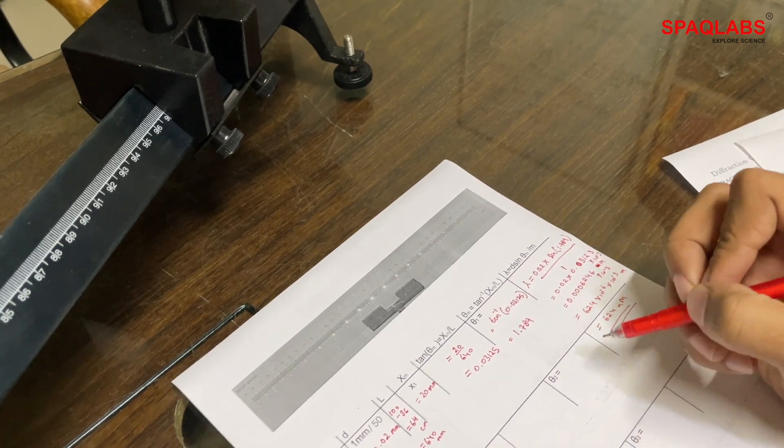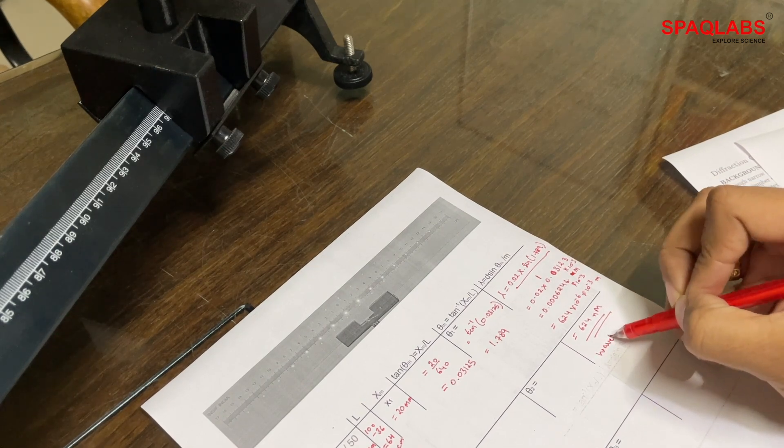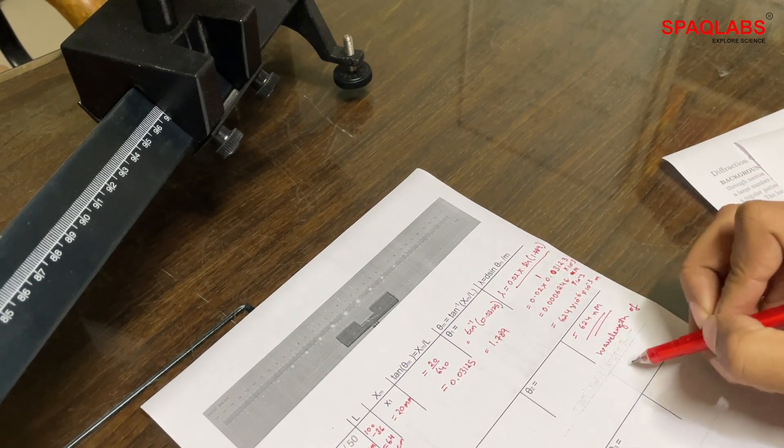After doing calculations, the calculated wavelength of the helium-neon laser is 624 nanometers.